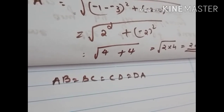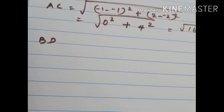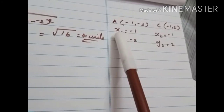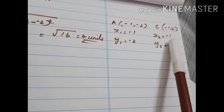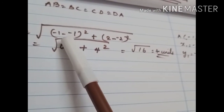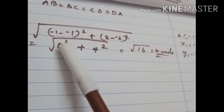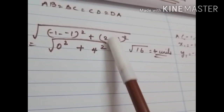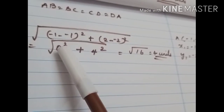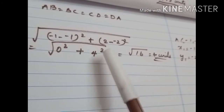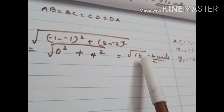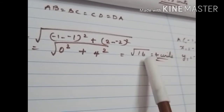Since all four sides are equal, we need to check whether the diagonals are also equal. We find diagonal AC with A(-1, -2) and C(-1, 2): x1 = -1, y1 = -2, x2 = -1, y2 = 2. Substituting: root of (-1 minus -1) squared plus (2 minus -2) squared = root of 0 squared plus 4 squared = root of 0 plus 16 = root 16 = 4 units. So AC = 4 units.